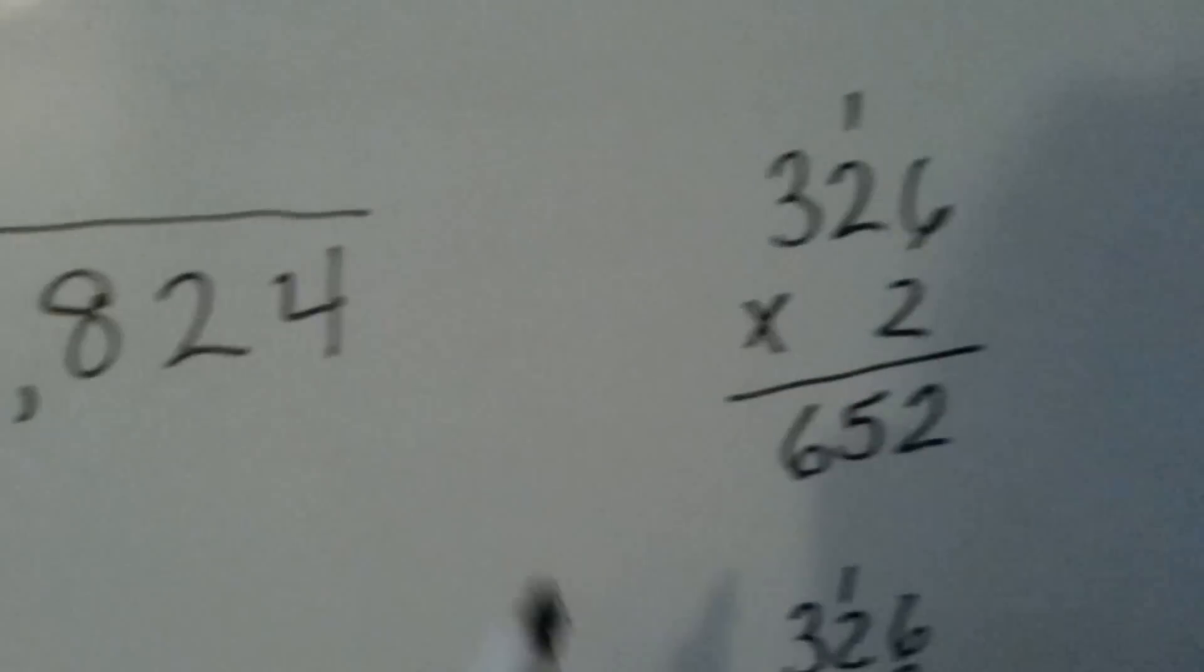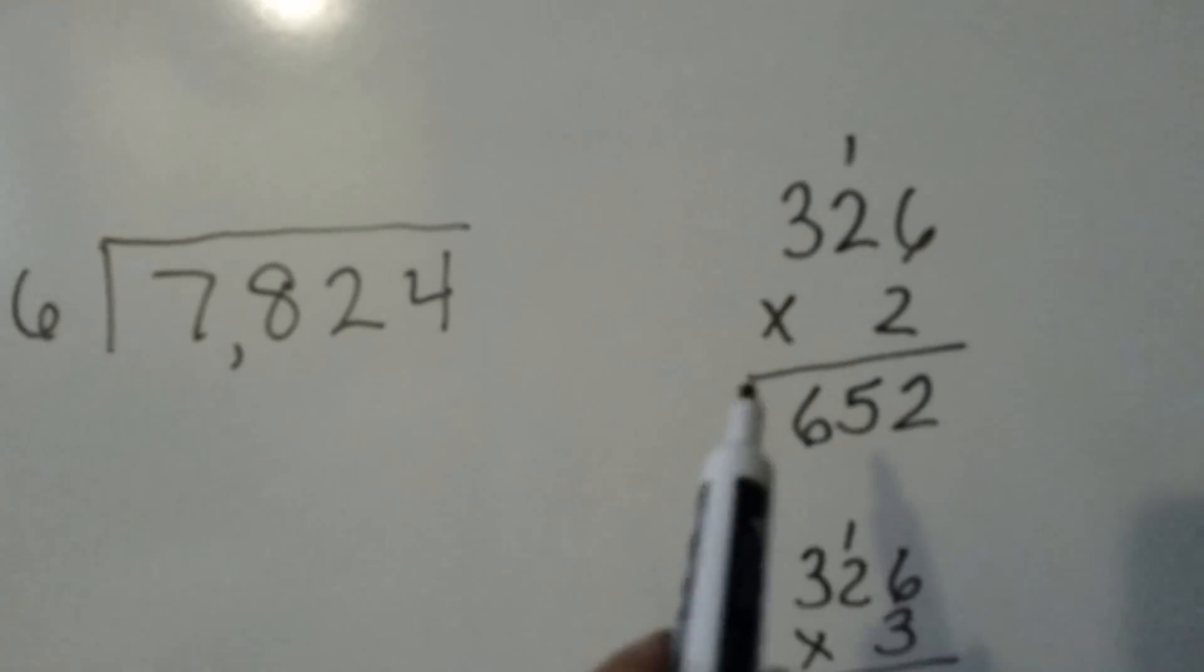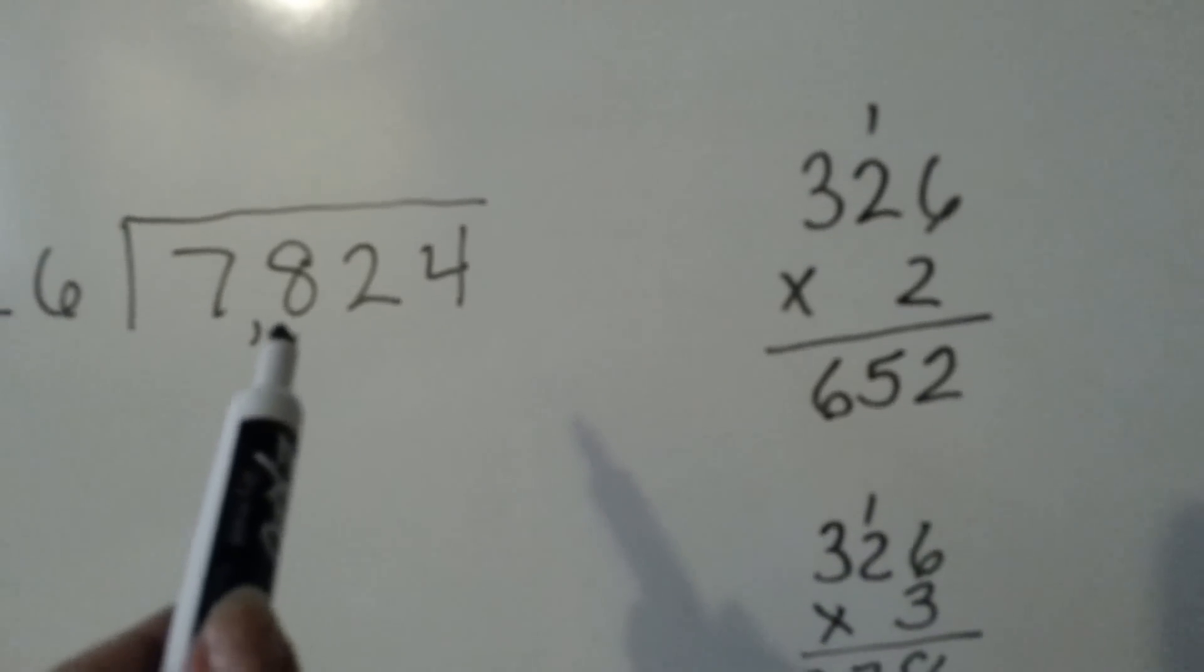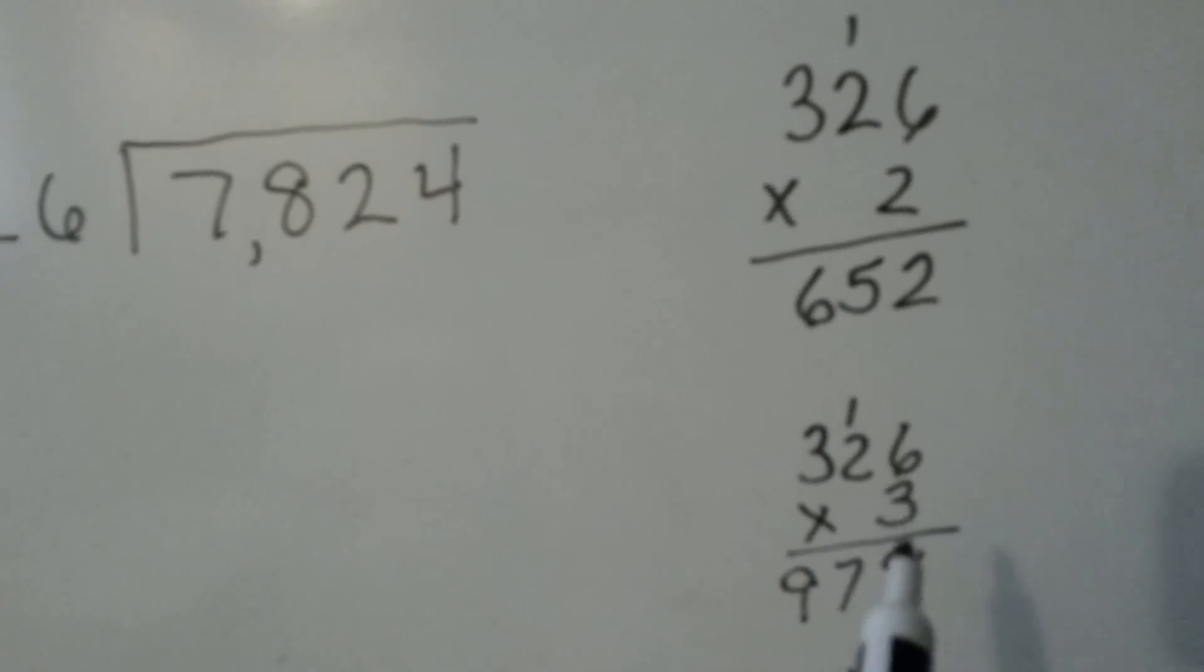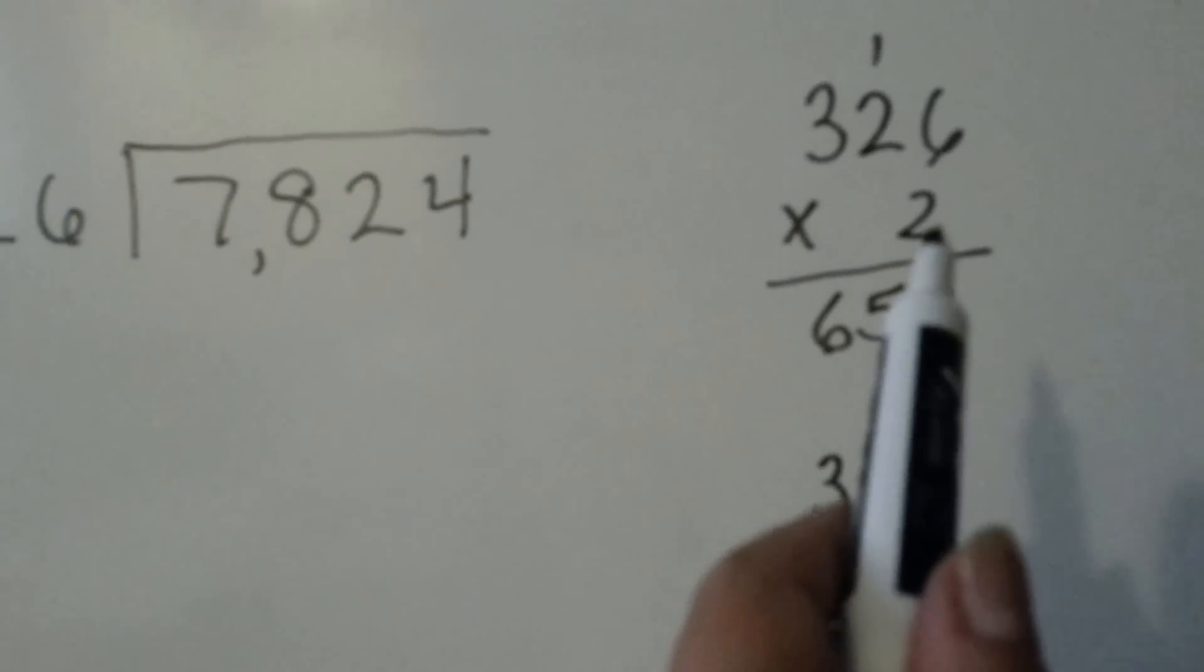Now we need to figure out how many times 326 can go into 782. The only way to do it is to do multiplication on the side. 326 times 2 is 652. That would fit into 782. Would it fit one more time? Three times? 978. That's way too big. So let's go with the two.